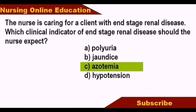In chronic kidney disease, as the kidneys fail, waste materials accumulate in the blood — that is azotemia. So the answer is azotemia.